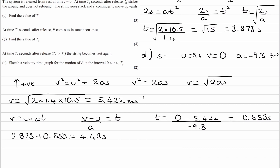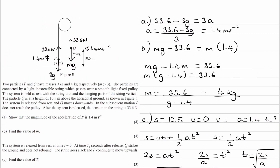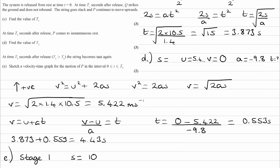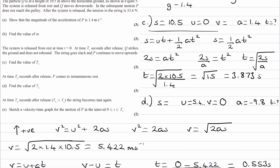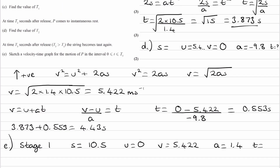For part E: at time T3 seconds after release, where T3 is bigger than T1, the string becomes taut again. We want to sketch a velocity-time graph for P in that time interval. I'm going to split this up into three stages. Stage 1 is when Q travels down 10.5 meters and hits the ground, so P travels up by the same distance. Using our earlier SUVAT quantities: P travels 10.5 m upwards, starts at rest (U = 0), reaches a final velocity of 5.422 m/s, with acceleration 1.4 m/s², and time 3.873 seconds.